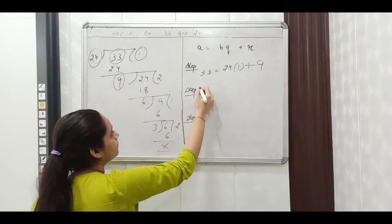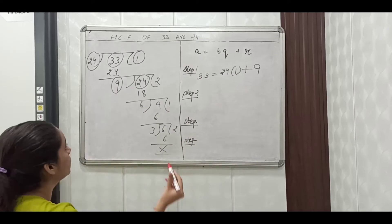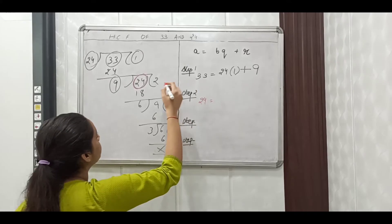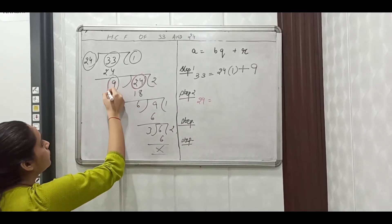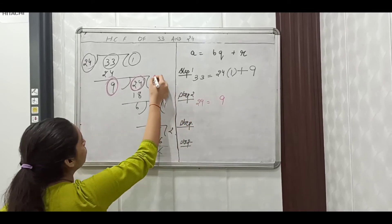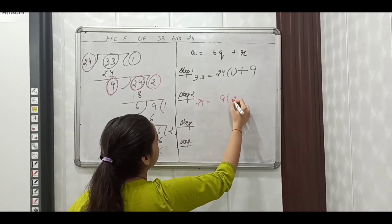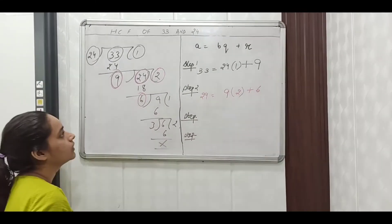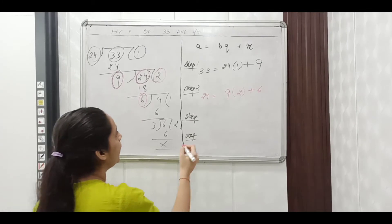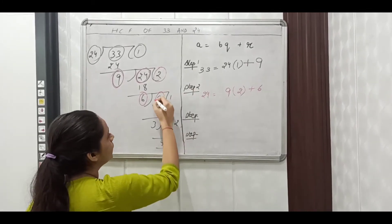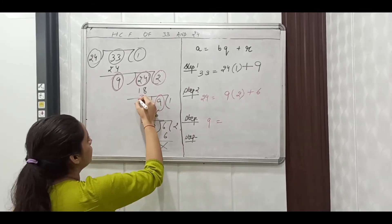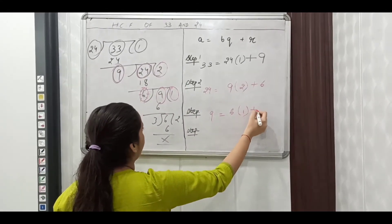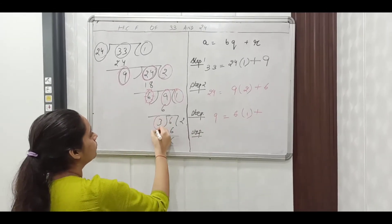In step two, A is equal to 24, B is equal to 9, Q is equal to 2, and R is equal to 6. Now in step three, we have A is equal to 9, B is equal to 6, Q is equal to 1, and R is equal to 3.